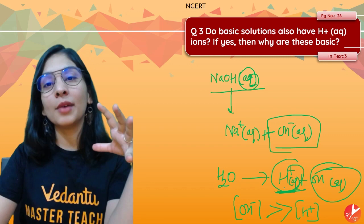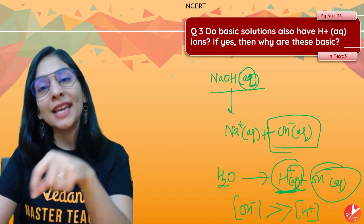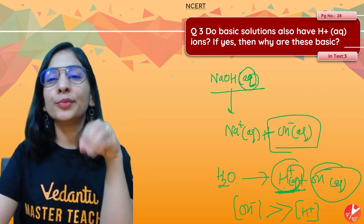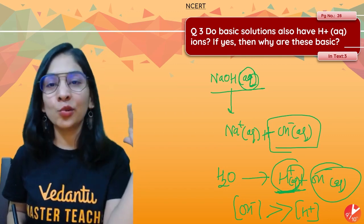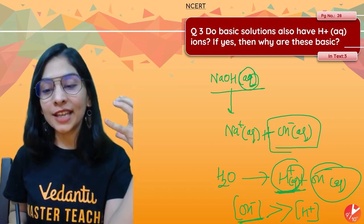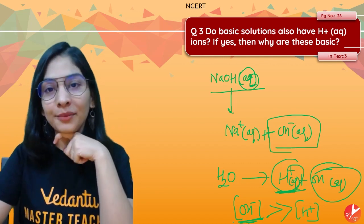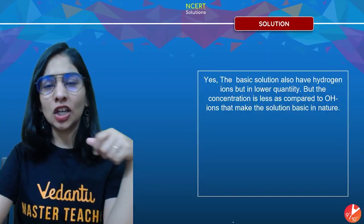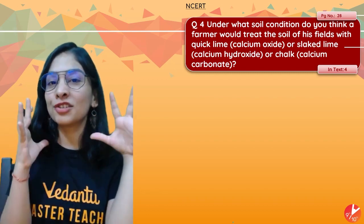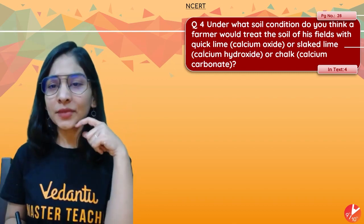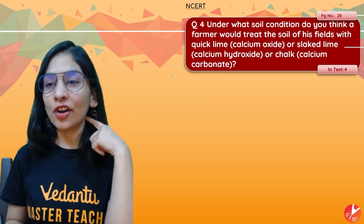But still why is it basic? Because see, OH- ions are being given by both water and the base, so the overall concentration of OH- ions is very high as compared to the concentration of H+, which is very minor due to water only. You can understand that due to these OH- ions that are in large amount, the substance will be basic only because H+ ions are very, very less. Whatever little H+ ions are there will neutralize with some OH- ions, but still there are excess OH- ions present.